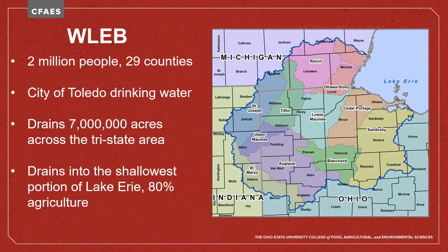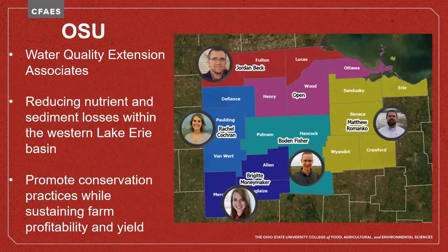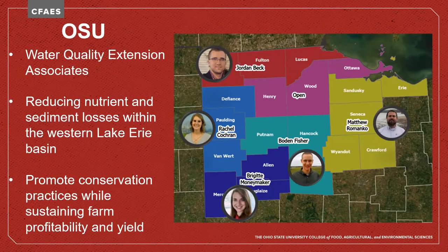The price of harmful algal blooms extends beyond damage to the lake itself — it also disrupts a multi-billion dollar economy including a globally recognized freshwater fishing and birding industry, not to mention revenue lost to decreased tourism, decreased property values, and health impacts for people who rely on that watershed for drinking water, such as Toledo. The western Lake Erie basin is highlighted as a key player for its contribution to Lake Erie's water quality — the watershed is nearly 80 percent agriculture and drains about seven million acres across the tri-state area. OSU Extension water quality associates are located in this area to directly assist farmers in implementing conservation practices.